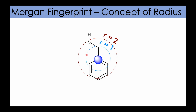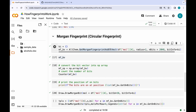If the radius is two, the algorithm considers circular substructures extending up to two bonds away from the central atom — including the immediate neighbors and their neighbors. So when the radius is two, we also include the oxygen which is two bonds away, and the meta carbons as well. Let me run this command and store the Morgan fingerprint as a bit vector in the variable mf_bv.